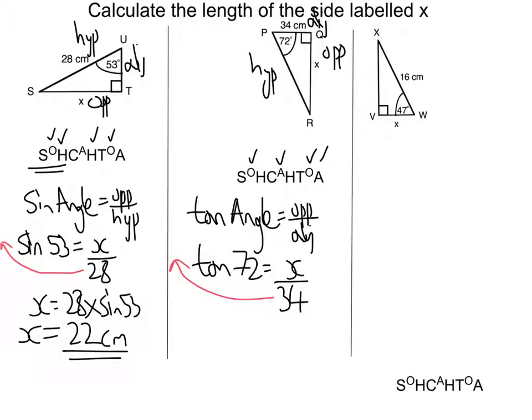Now I need to move my 34, get it on the other side so we've got x on its own. So that's x is equal to 34 times tan 72. I put that into my calculator, and to the nearest centimeter, it is 105 centimeters.